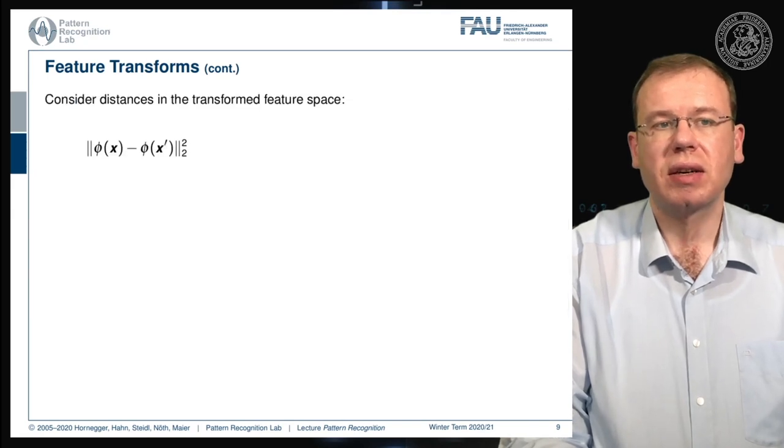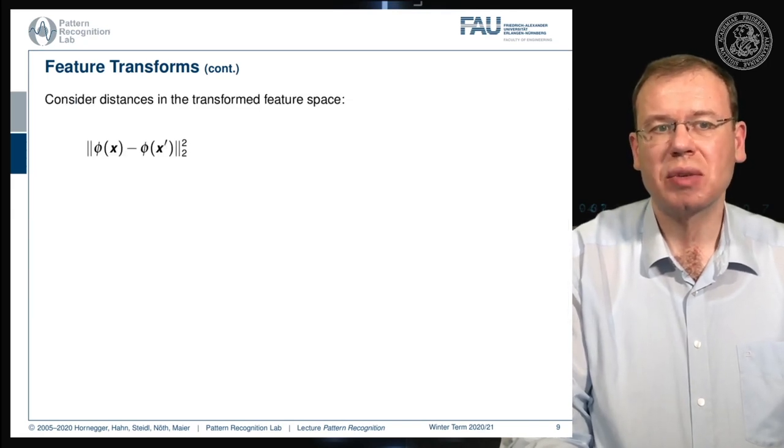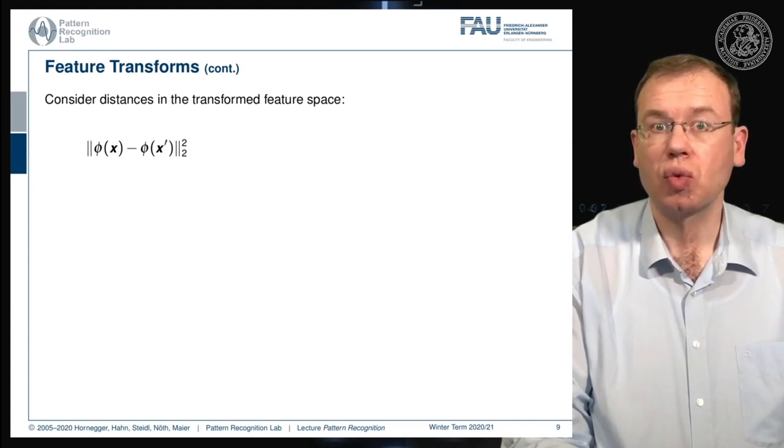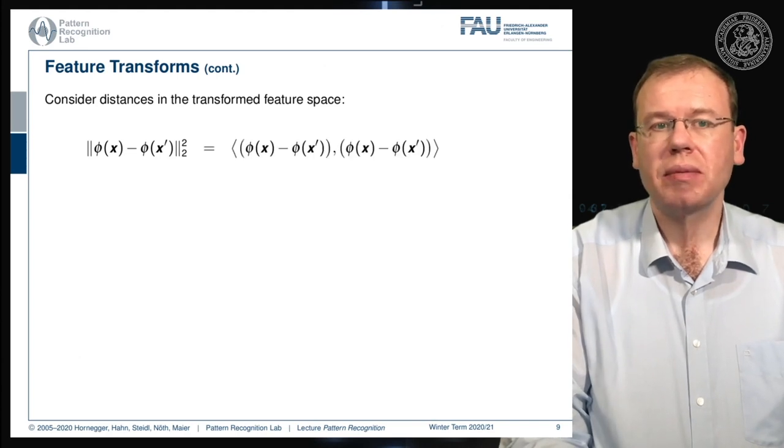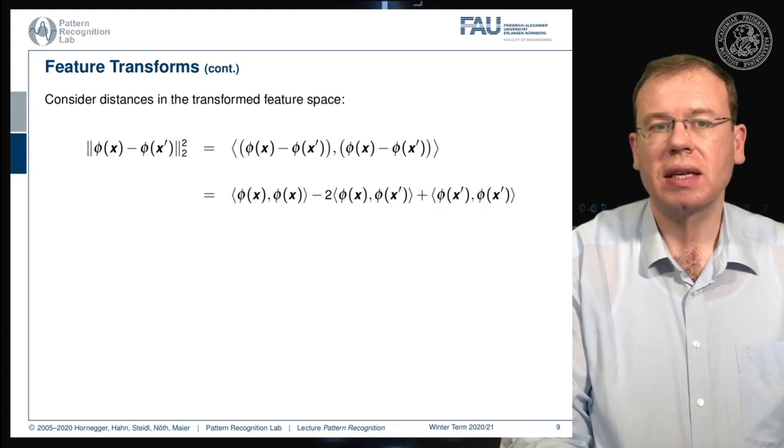Now let's consider the distances in the transformed space. So I apply phi and I apply it to some x and some x prime and take the 2 norm. Now if we scratch this out then you see this is the inner product of the two differences and we can essentially write this up and you see that I get essentially only inner products.